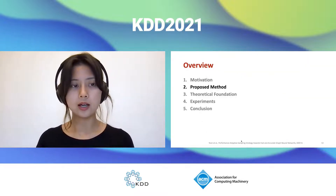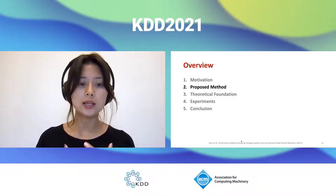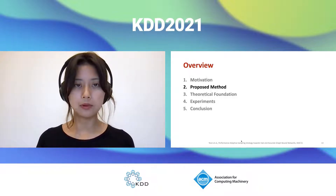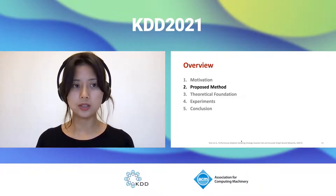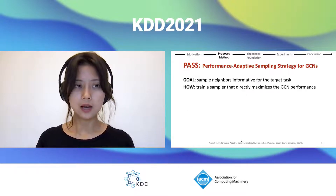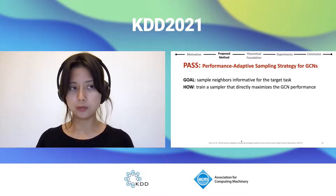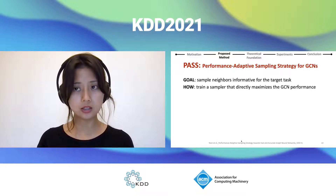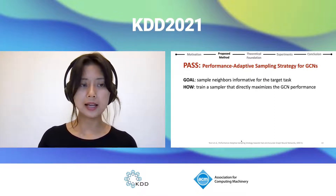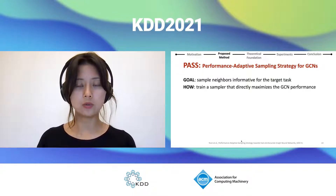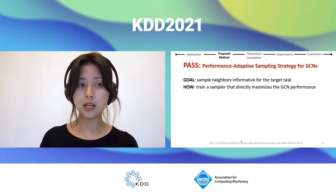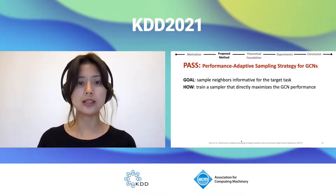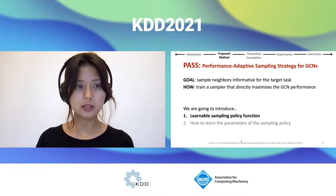So until now, I described why we need a performance-adaptive sampling strategy for GCN. Now I'm going to talk about our proposed sampler, PASS, which stands for Performance Adaptive Sampling Strategy for GCNs. The PASS goal is to sample neighbors informative for the target task, and to do that, we need to train a sampler that directly maximizes GCN performance.